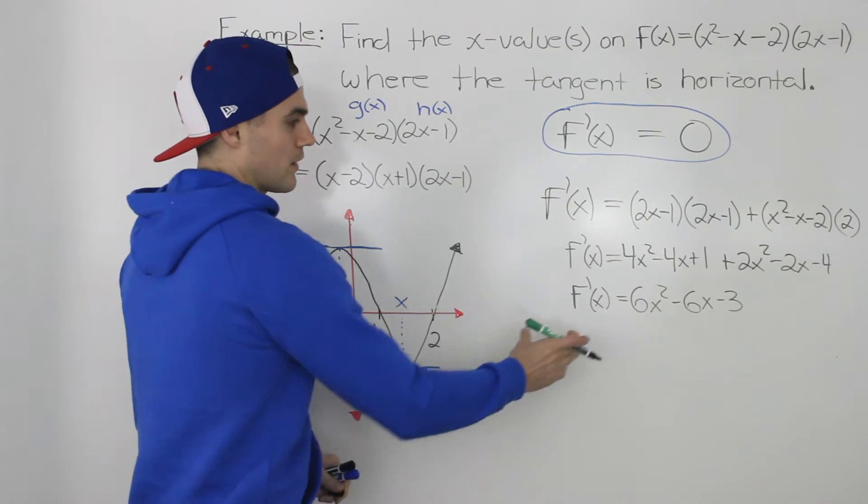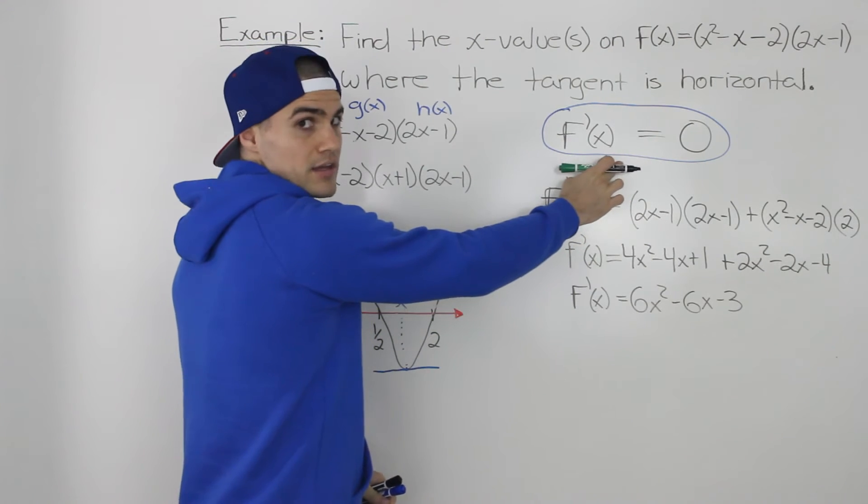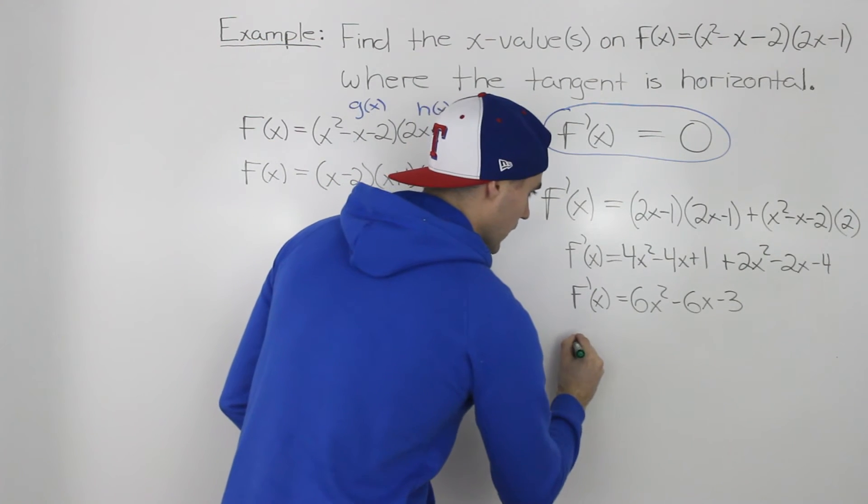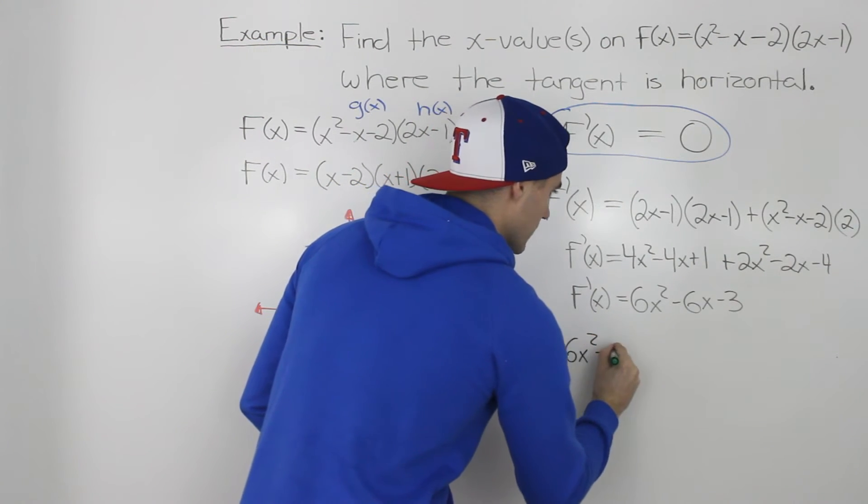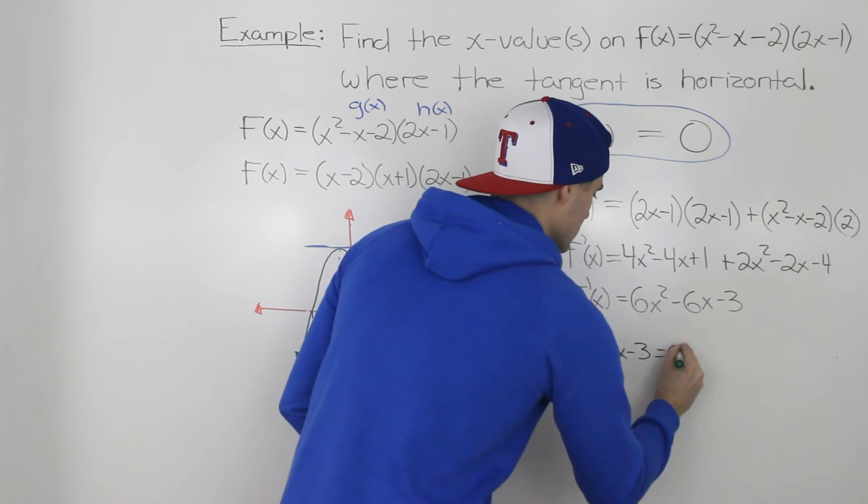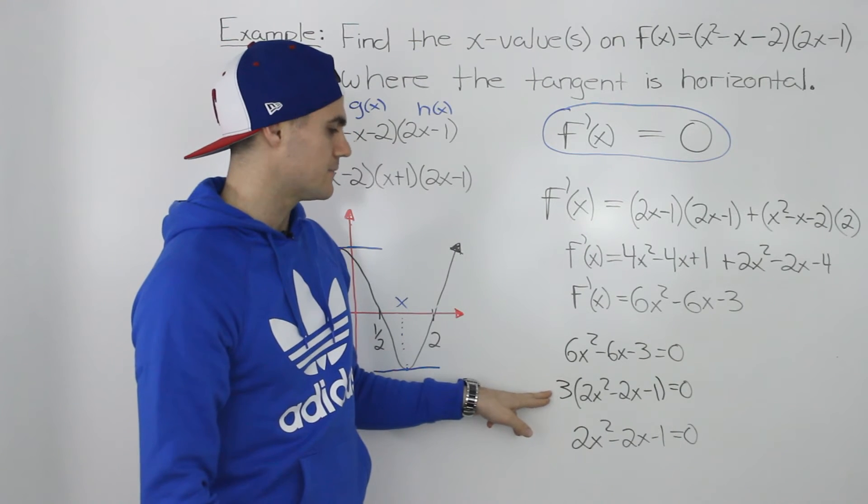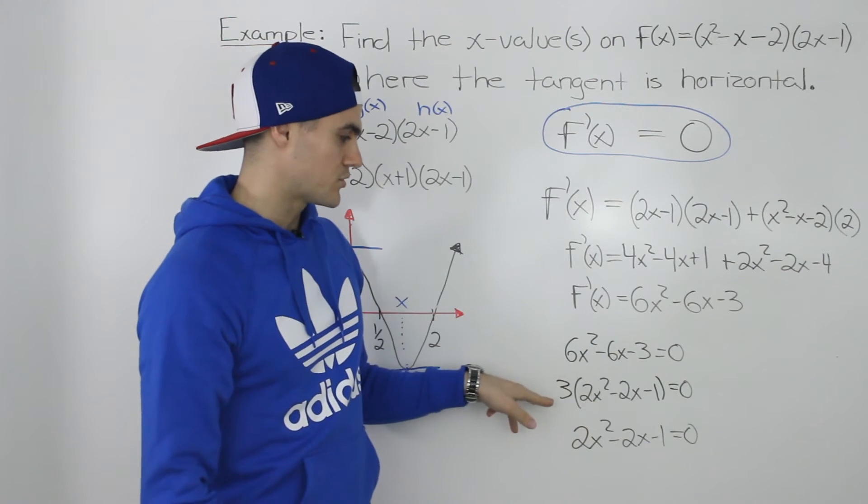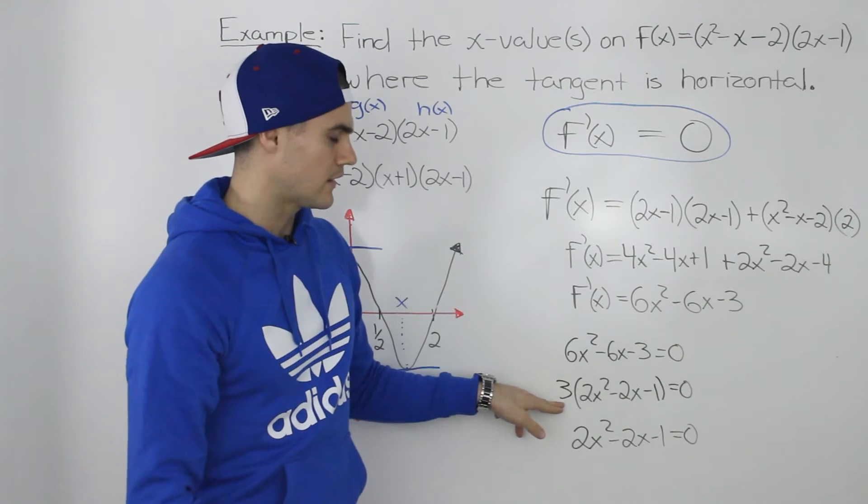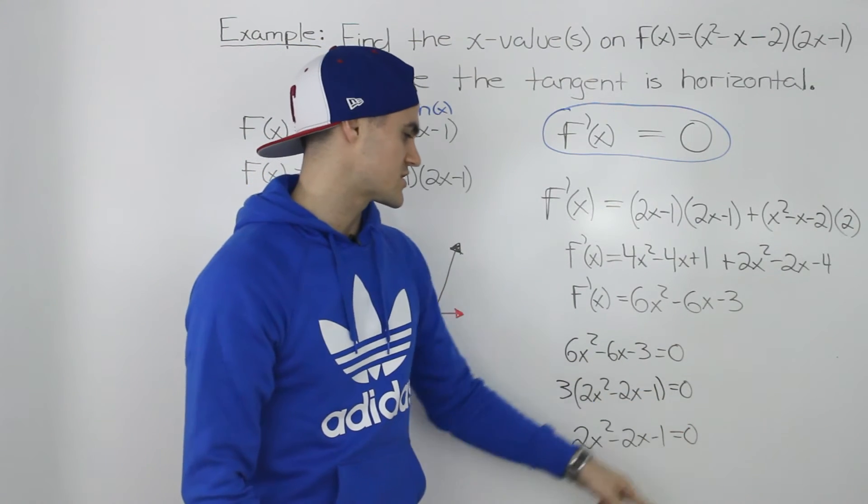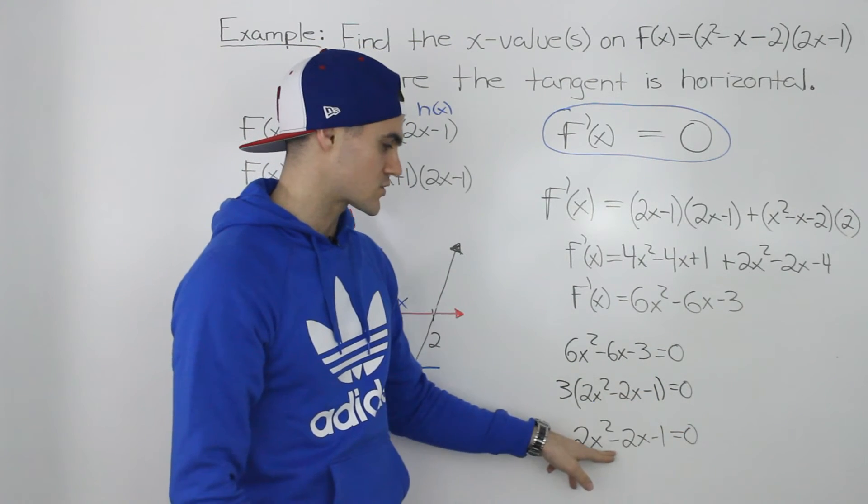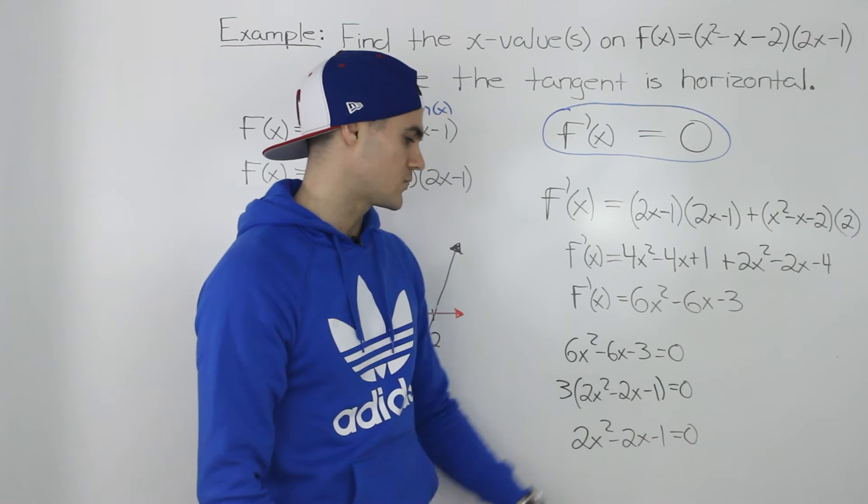So now that we have the derivative, we can solve this equation. So when does 6x squared minus 6x minus 3 equal 0? And then factoring out a 3 from the left side and then dividing both sides by 3, the 3 would go away on the left side and 0 divided by 3 is just 0. So we'd just be left with 2x squared minus 2x minus 1 equals 0.